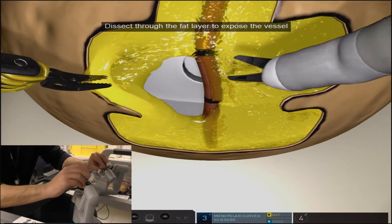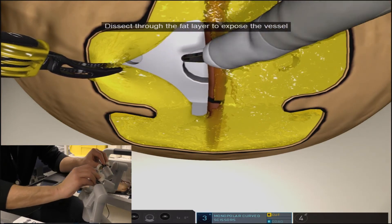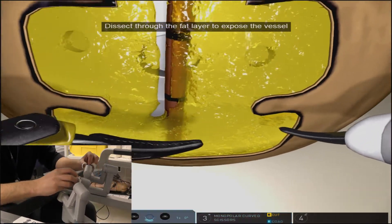You can use your left hand grasper to grab the fatty tissue and create tension which allows you to more easily dissect out the sides of the vessel wall.